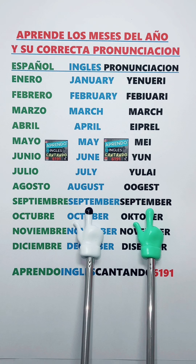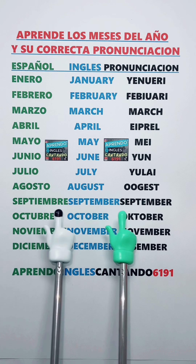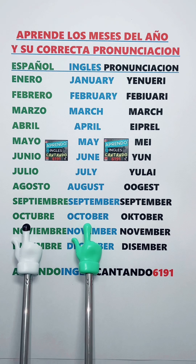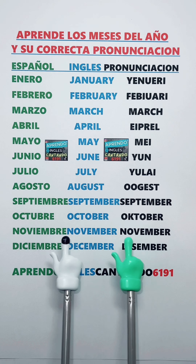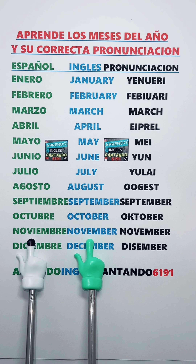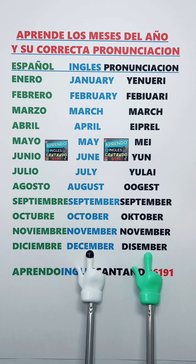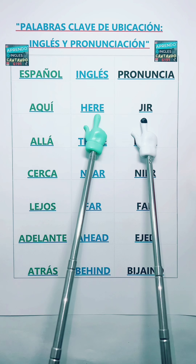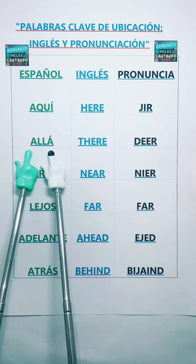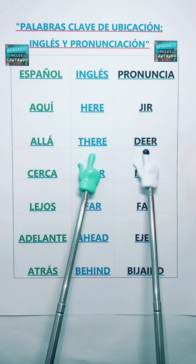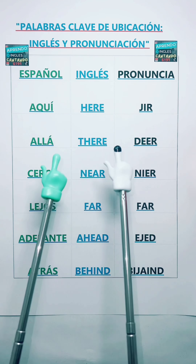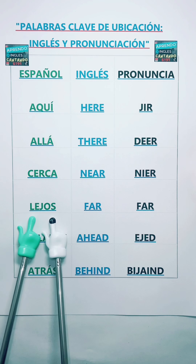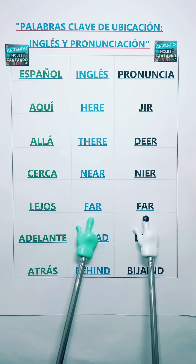September. October. November. December. Aquí — Here. Allá — There. Cerca — Near. Lejos — Far.